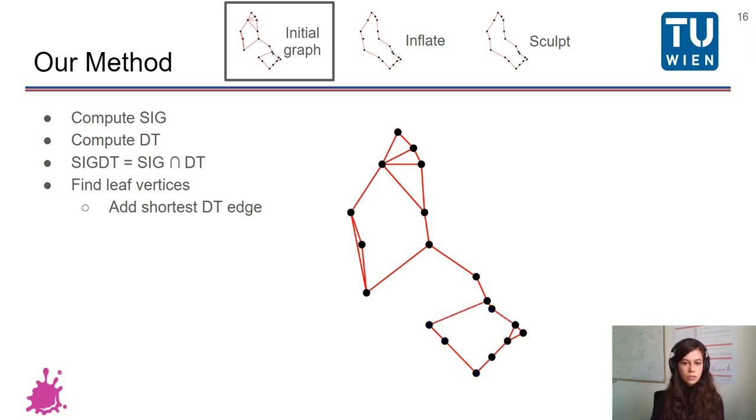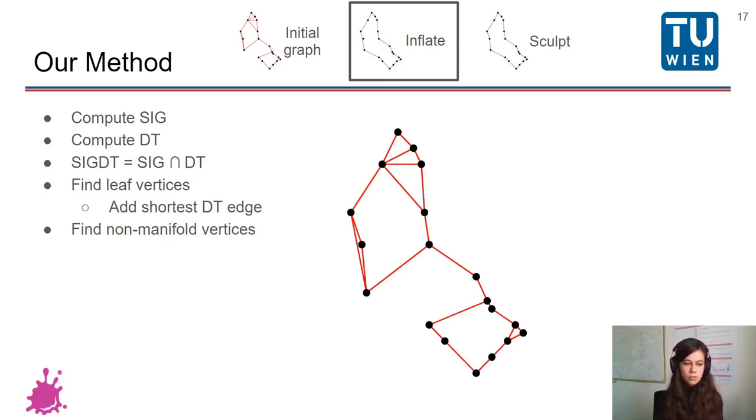And we now can go on to the inflate step. First, for this, we have to find non-manifold vertices. Non-manifold vertices are either vertices which have more than two neighboring edges on the boundary, or whose both planes are part of the outside of the shape. These are highlighted in blue now. And we look for incident triangles which are considered candidates, highlighted in grey. We want to add to the reconstruction the triangles which least increase the total boundary length. And we start from the triangle on the bottom.